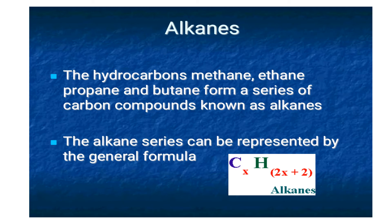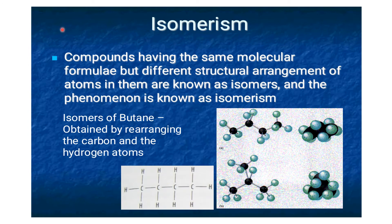Alkanes are saturated hydrocarbons known as aliphatic or acyclic hydrocarbons that can only form single bonds between atoms. The study of saturated hydrocarbons leads to a new property known as isomerism.